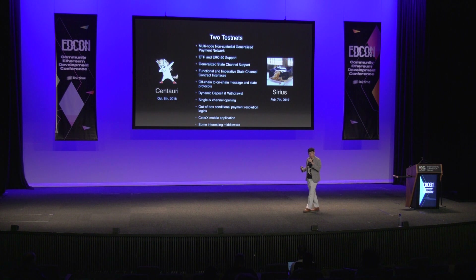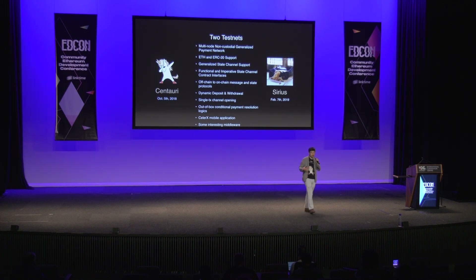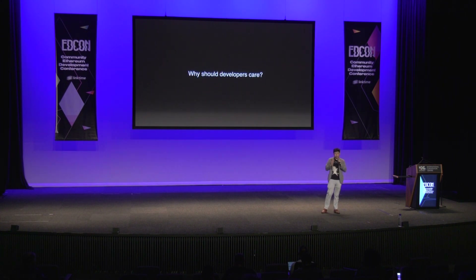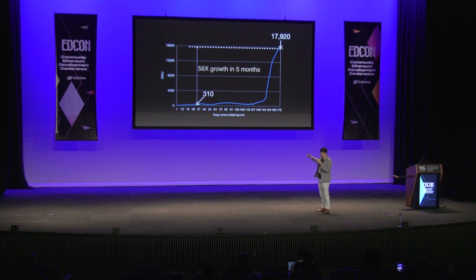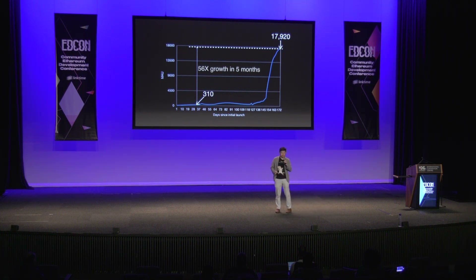During the past six months, we released two testnets: one called Centauri, released around October 2018, and the other called Sirius. We have a huge amount of features supported, including multi-node, non-custodial, and generalized payment networks. We support both ETH and ERC-20, generalized state channels, functional and imperative state channel contract interfaces, off-chain and on-chain message and state protocols. We actually wrote a Solidity protobuf parser to realize this. From day one to day 172, we grew monthly active users on the testnet from 310 to 18,000 just at the beginning of April — a 56x growth in five months. We believe we are operating the largest generalized state channel network in the world right now.